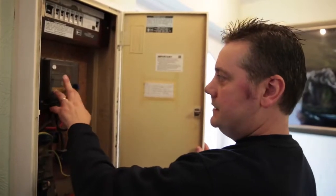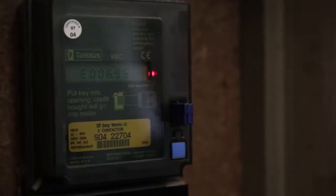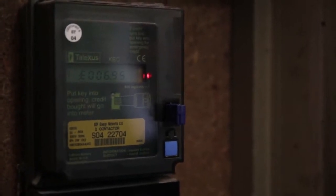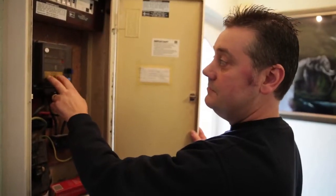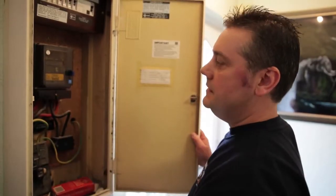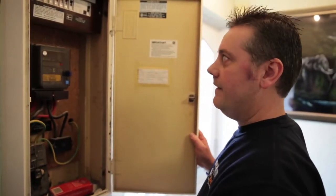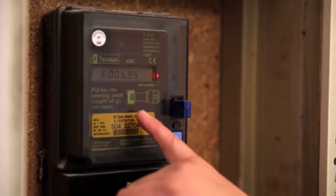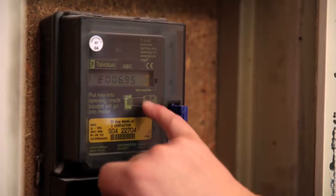Down below is the key meter. Always make sure that you have got credit on the actual key. Normally what happens is the key runs out and the tenant's got no credit, which will mean you have no electric to your lights or sockets. This is a typical key meter with £6.95 on.